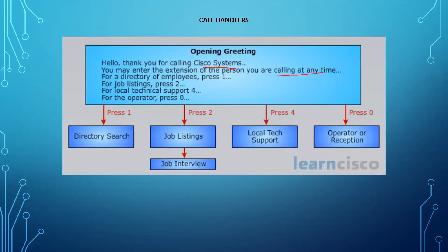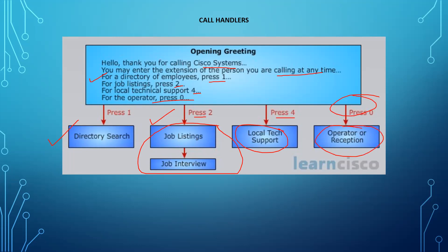In this Opening Greeting, when somebody calls the configured extension, it says: 'Hello, thank you for calling Cisco Systems. You may enter the extension of the person you are calling at any time. For a directory of employees press 1, for job listing press 2, for local technical support press 4, for the operator press 0.' So pressing 1 should go to directory search, pressing 2 to the interview call handler, pressing 4 to local tech support, and pressing 0 to the operator.